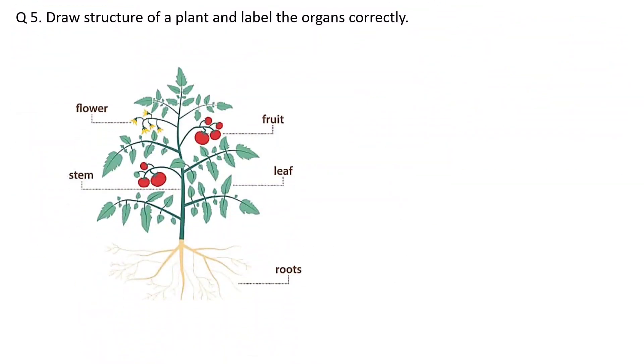Fifth question: Draw the structure of a plant and label the organs correctly. So you need to draw a diagram of the plant structure with organs and parts labeled like flowers, stem, fruit, leaf, fruits, etc.